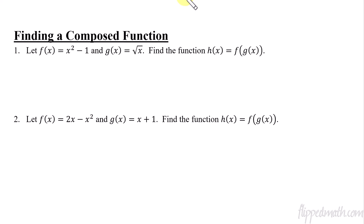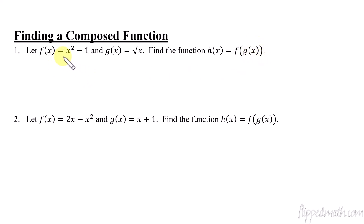In this lesson, we're going to first look at how to actually come up with the function analytically — not just plugging in numbers, but what is the actual function? When we look at this first problem, find the function h if it equals the composed function f of g of x. So g of x is going to get plugged in to f of x. We're taking g of x and plugging it into every instance of x. f of x only has one variable x in this case, so it's a simple one.